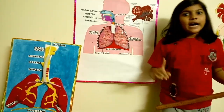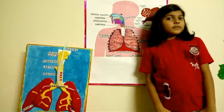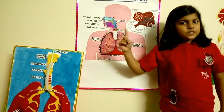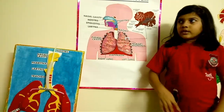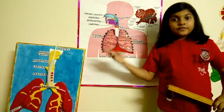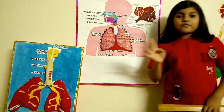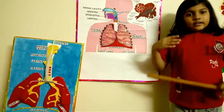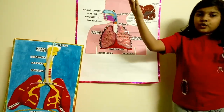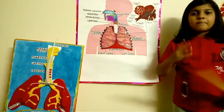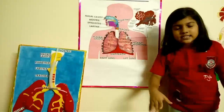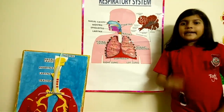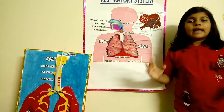Now we should remember to keep the respiratory system healthy. We should stop smoking and stay away from secondhand smoke — if someone beside you is smoking, you need to stay away. You should also avoid indoor and outdoor air pollution, exercise regularly, get enough sleep, stay active day by day, and eat a healthy and balanced diet.